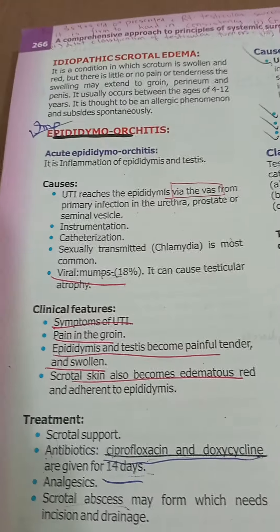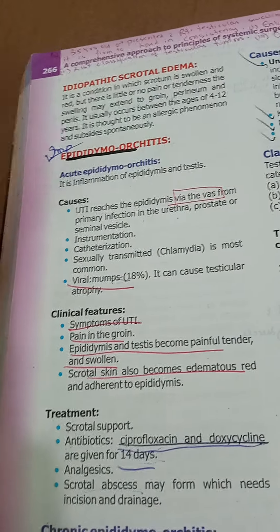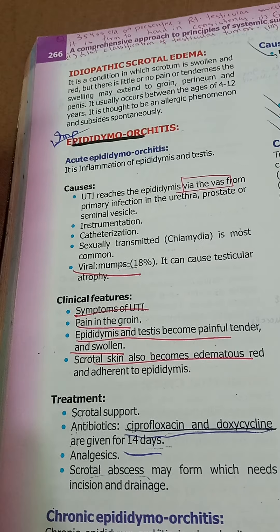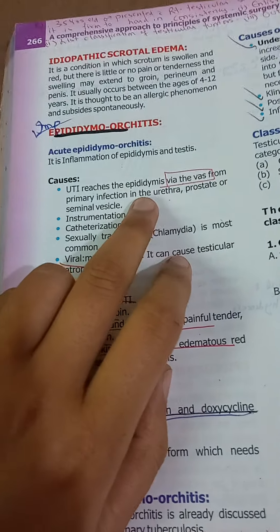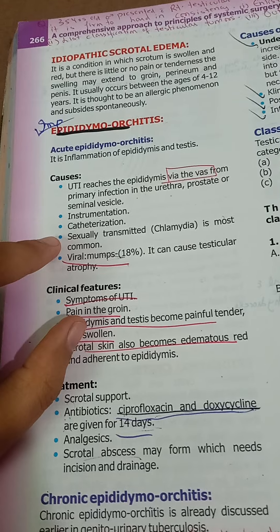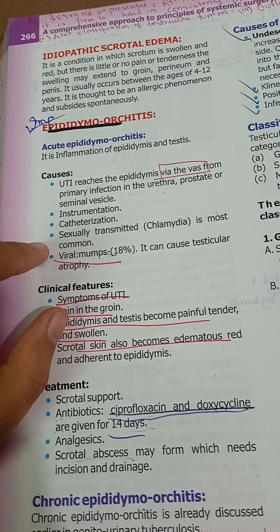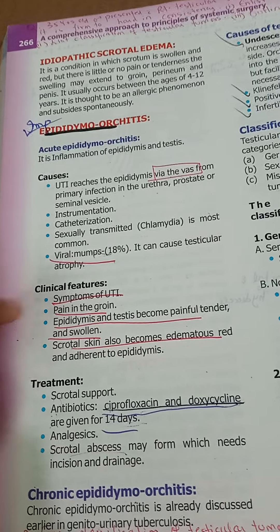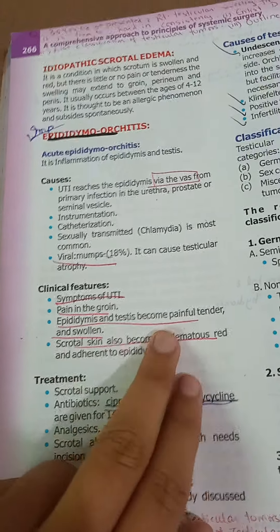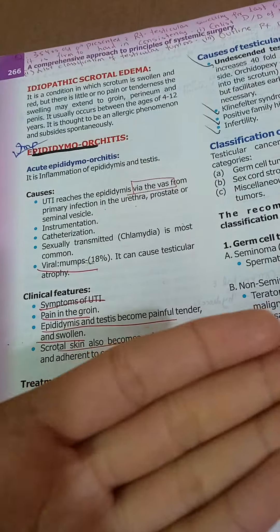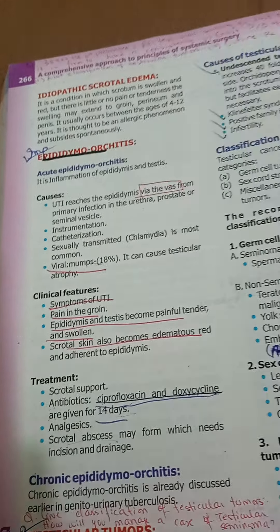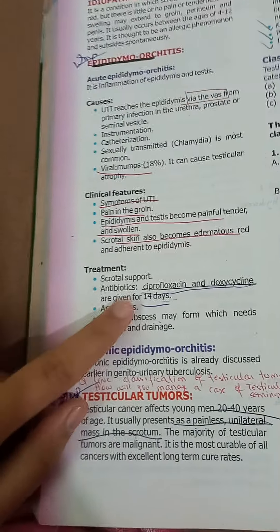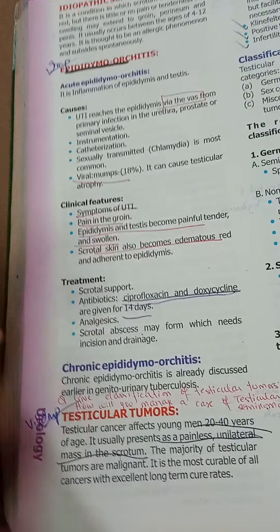Next is epididymo-orchitis, which is acute inflammation of the epididymis and testis. Causes include vas deferens infection, instrumentation, catheterization, STIs such as chlamydia, and viral causes like mumps. Clinical features include UTI symptoms, pain in groin, and the epididymis and testis become tender, painful, and swollen. Pain is relieved on elevation — positive Prehn's sign — differentiating epididymo-orchitis from torsion.